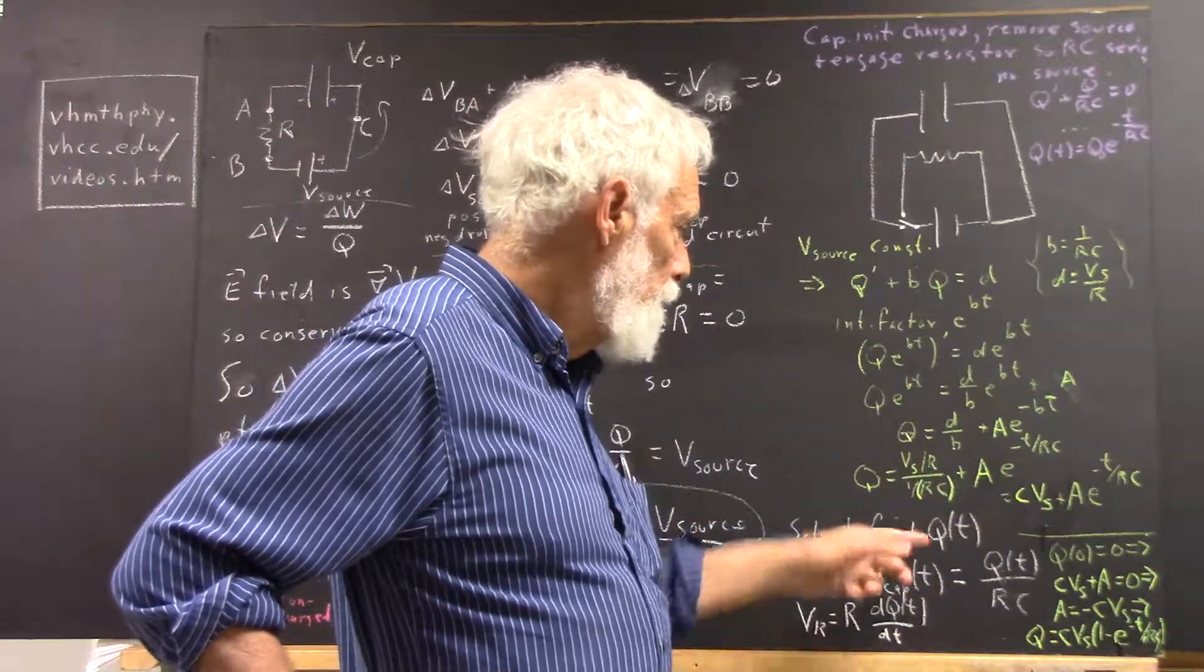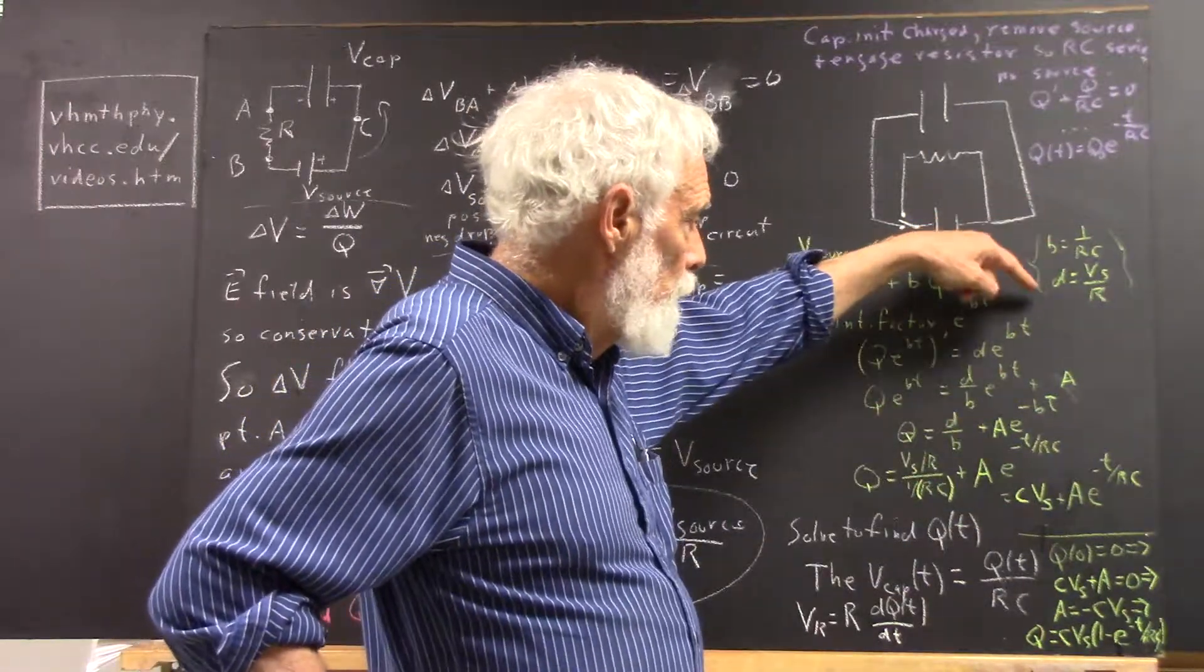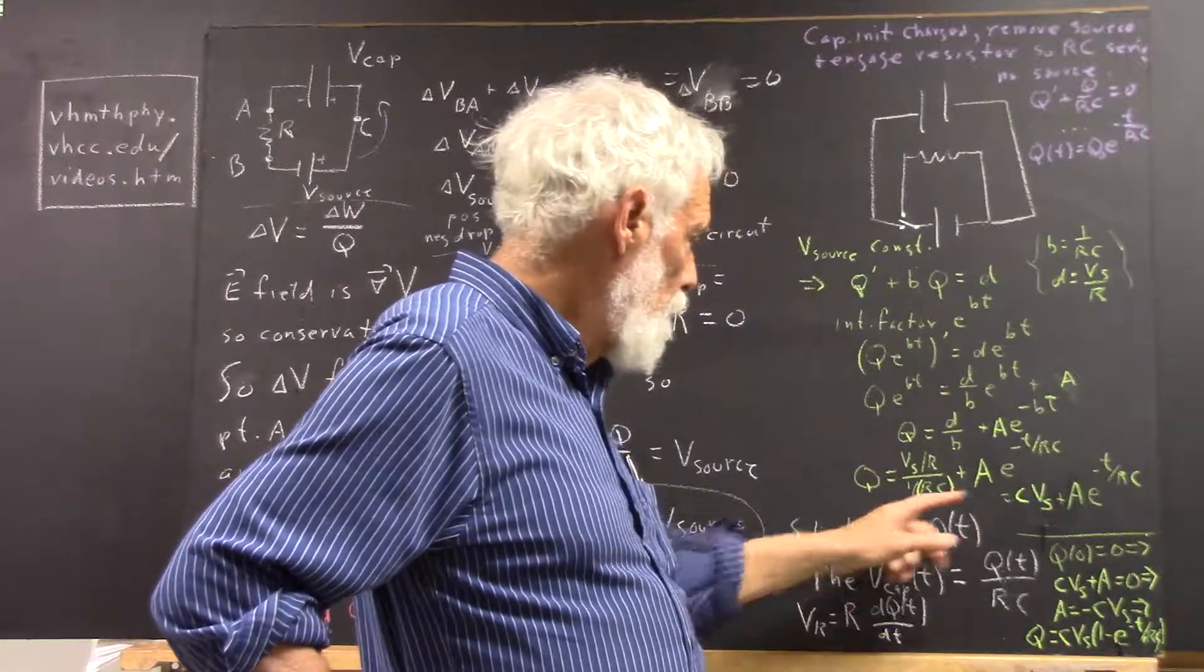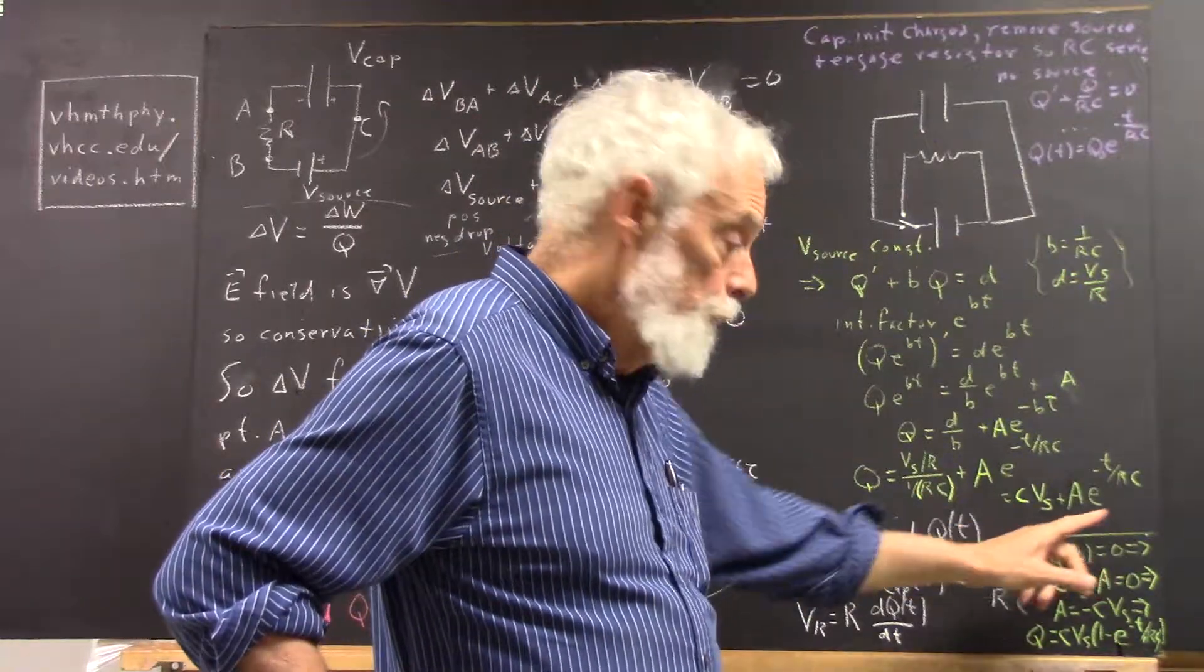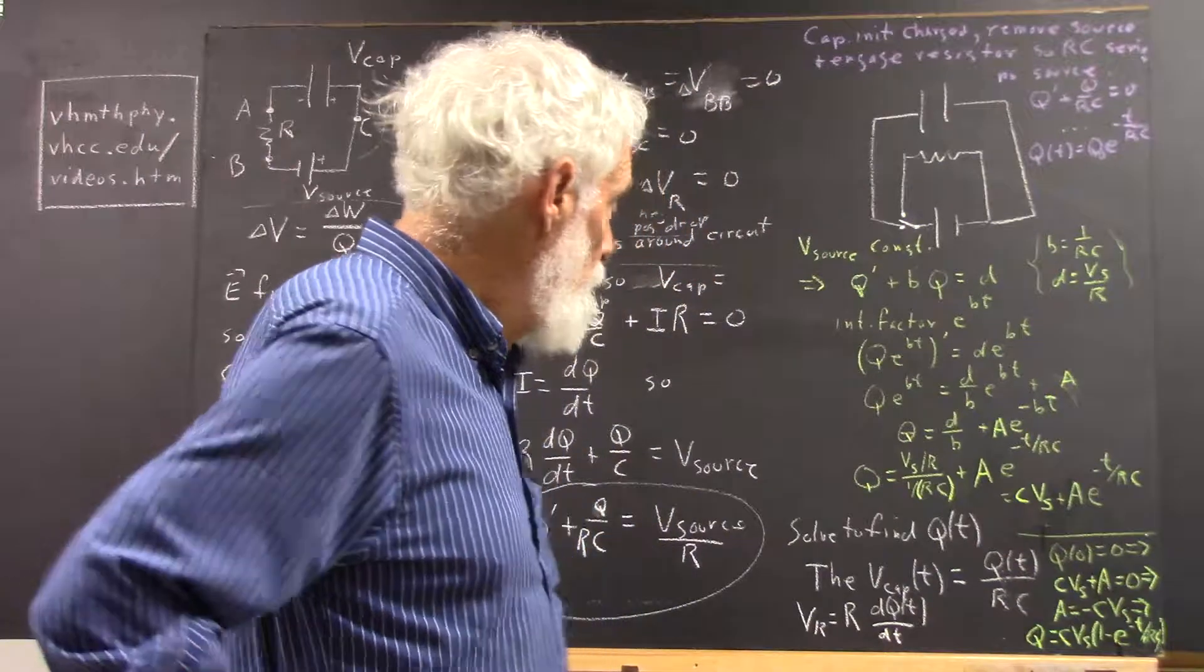q is therefore this, and then letting b equal 1 over RC, d equal Vs over R, we get this form for the q function.